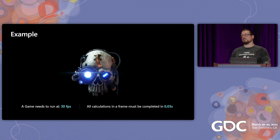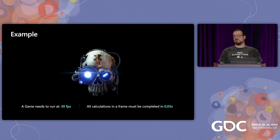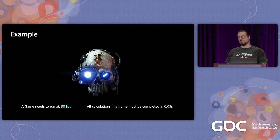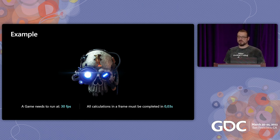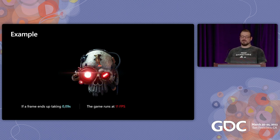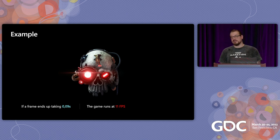For example, if you have a game that needs to run at 30 frames per second to not appear laggy, all calculations of that frame must be done in 0.03 seconds. If the processor can't complete all computations in that time limit, it will still continue to complete that frame regardless of how long it takes. So in a bad spot of the game, a frame might end up taking 0.09 seconds, resulting in barely 11 frames per second.